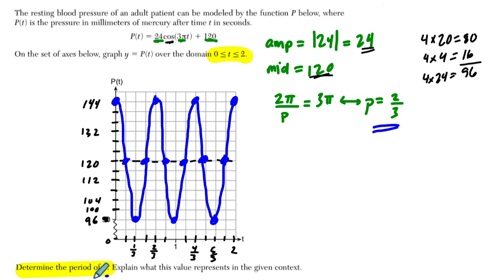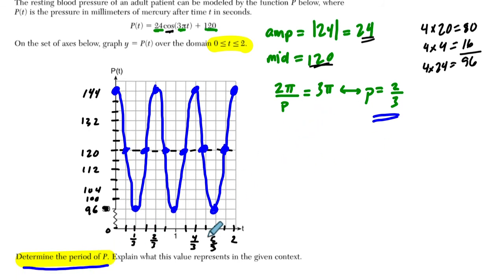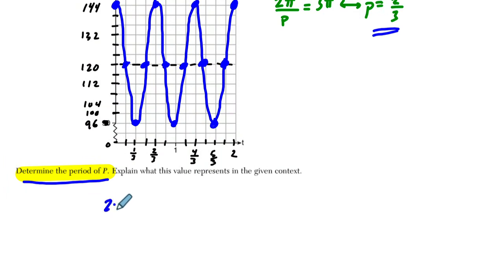Now to determine the period of P, we showed that work right here. You take 2π, divide it by the period to get 3π, and we're just going to show it in the right spot. That means that the period is two-thirds. And this little double arrow just means if and only if.